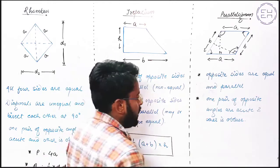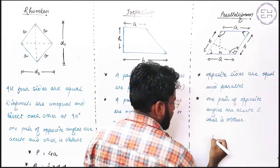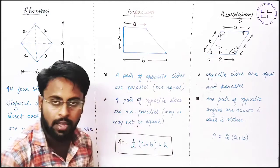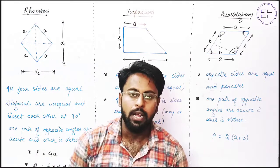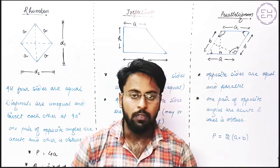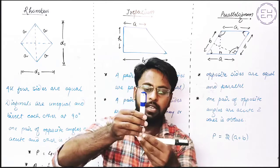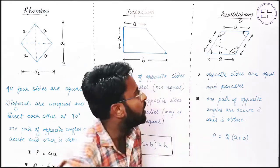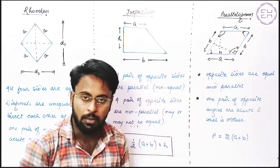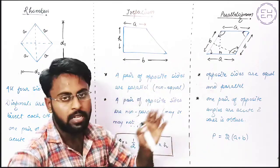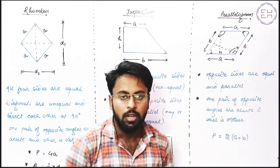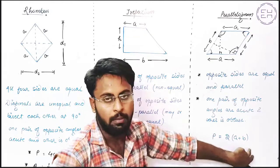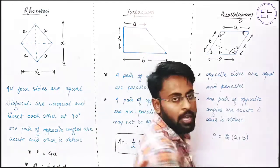Now talking about the perimeter of Parallelogram — the formula is 2(A + B). It is just like the Rectangle. In a Rectangle, the formula was 2(length + breadth), and similarly here in Parallelogram it becomes 2(A + B) because we have denoted the sides as A and B. The difference is that in Rectangle the adjacent sides form a 90-degree angle, while in Parallelogram one pair is acute and the other is obtuse.